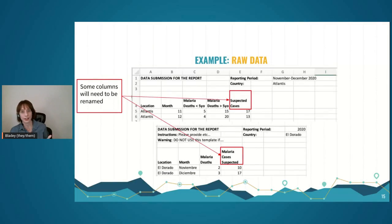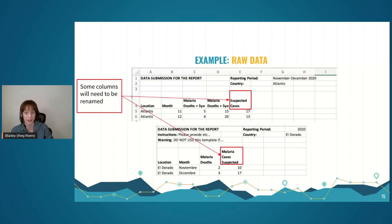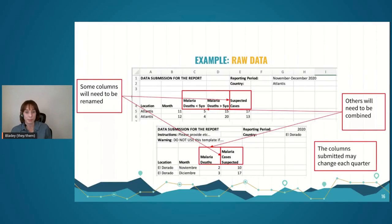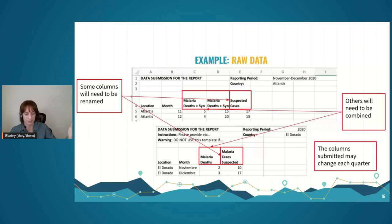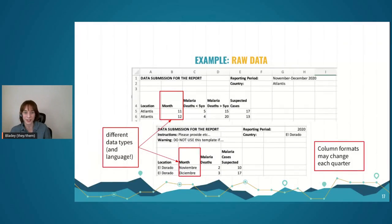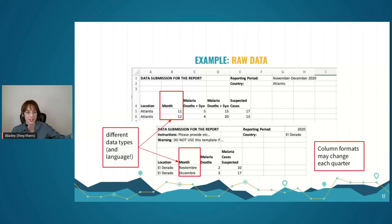Another challenge is that we have data we'd like to compare to each other — in this case, suspected cases — but it's labeled differently, with differences across countries and also within the same country at different times. Another example: malaria deaths are sometimes broken down by age, sometimes not, depending on the submission. It might be spelled differently, or even be in a different language, since this is coming from many dozens of countries — with different data types, different languages, and changes quarter to quarter.